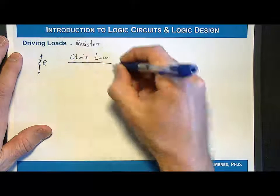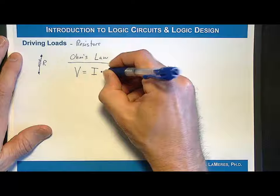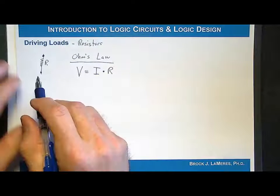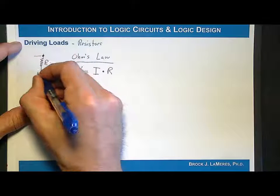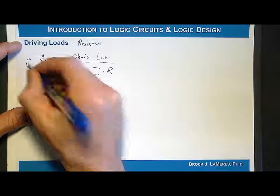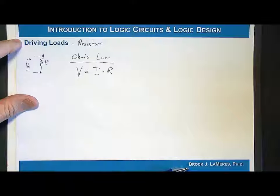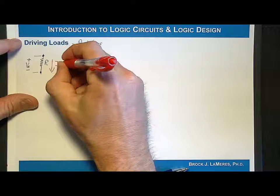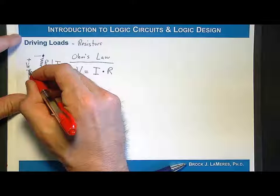Ohm's Law is very simple. It is V equals the current times the resistance. Resistance is an electrical property of a resistive component. In a passive device you're going to define two terminals — a positive and a negative — and we'll call that VR, the voltage across the resistor. In a passive device, the current always flows from the positive terminal to the negative terminal.